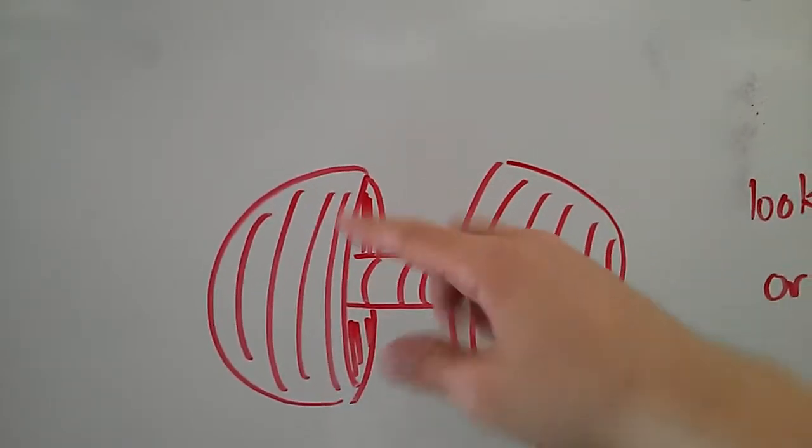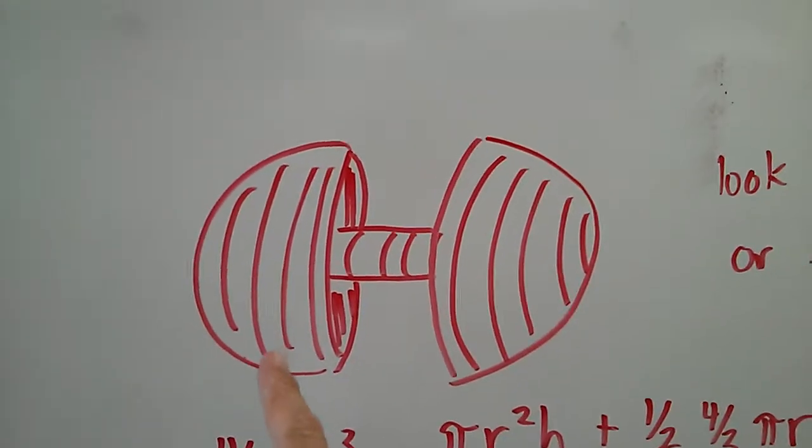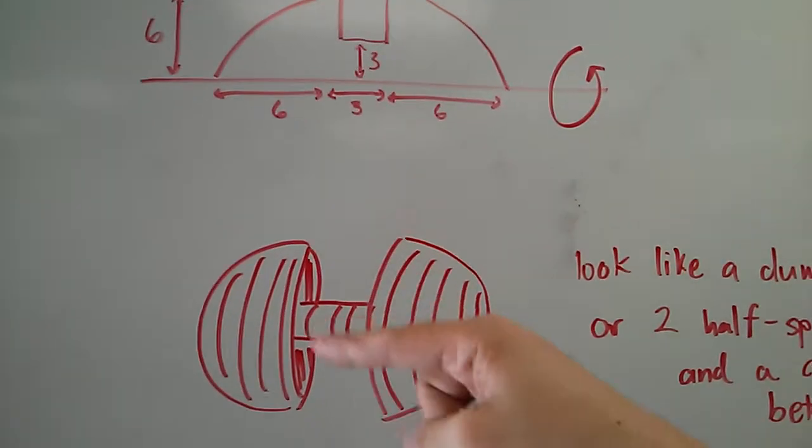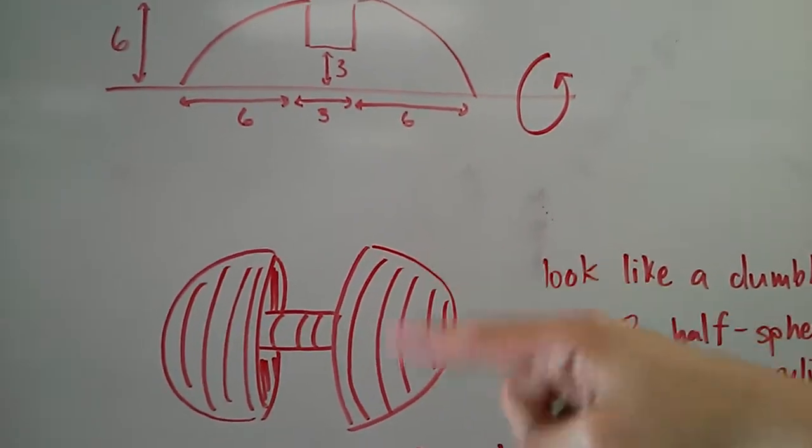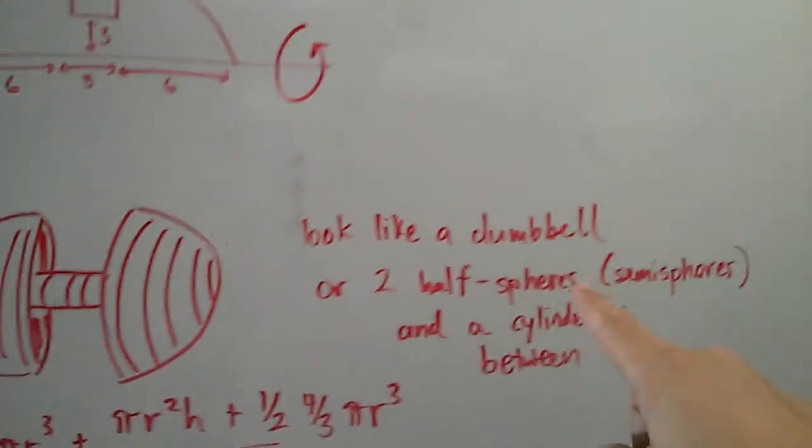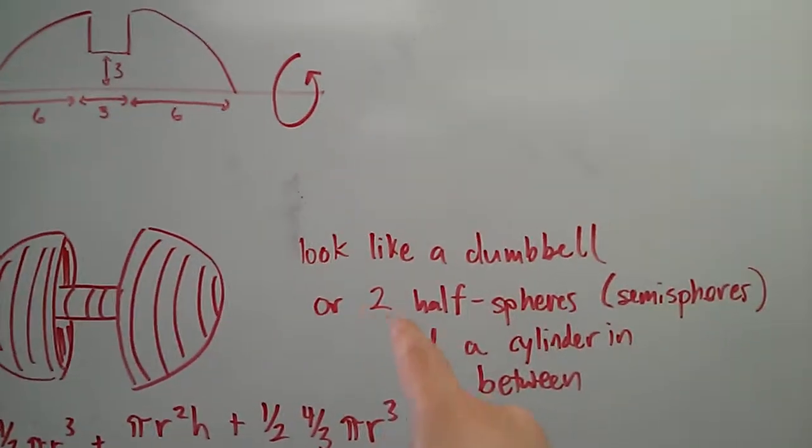...have a half sphere in the middle, then a cylinder, and then another half sphere. It looks like a dumbbell, or two half spheres, semi-spheres, and a cylinder in between.